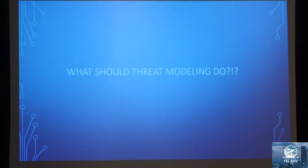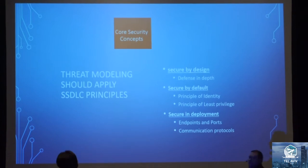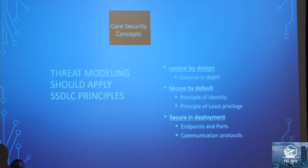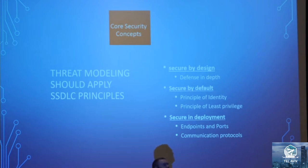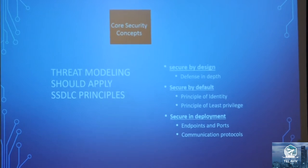What should threat modeling do? It should address three things. First, secure by design — you should be looking at defense in depth, and your models and designs should be able to defend themselves, especially in a microservices world. Second, they should fail to a secure state: everything inside the application should have identity, there should be no anonymous access, and you should apply the principle of least privilege. Third, especially in the DevOps world, it should be secure in deployment — know your endpoints, know what communicates inside and outside.